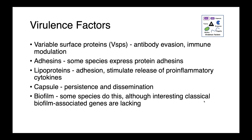Mycoplasmas produce a variety of virulence factors: variable surface proteins that allow them to evade antibodies in the immune system; adhesins, which are often species-specific and allow them to adhere to host tissues; lipoproteins involved in both adhesion and stimulating the release of pro-inflammatory cytokines; capsules, which allow for persistence and dissemination — likely facilitating that short survival time in the environment; and biofilm. Some species can form biofilm, though interestingly they lack the classical biofilm-associated genes seen in other bacteria.